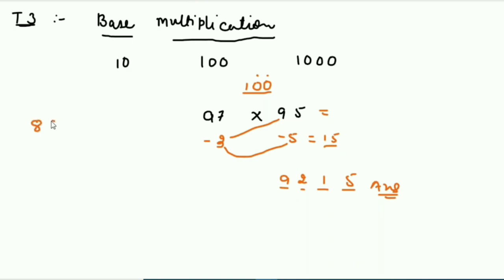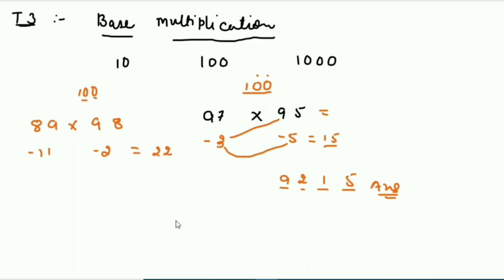Another example: 89 multiplied by 98. Numbers are near base 100. Difference: 89 is 11 less, 98 is 2 less — so put minus. Multiply both differences: 11 × 2 = 22. Two zeros in base, so last two digits are 22. Now subtract 2 from 89 to get 87. Your answer is 8722.